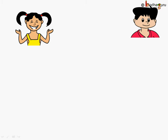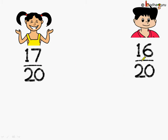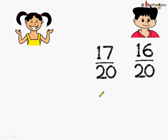Now coming to the next example. This is Khushi and this is Anand. Anand got 16 out of 20 marks, and Khushi got 17 out of 20. Here the denominators are the same, so we can just compare the numerators. 17 is greater than 16, which means 17 by 20 is greater than 16 by 20. So Khushi performed better than Anand.